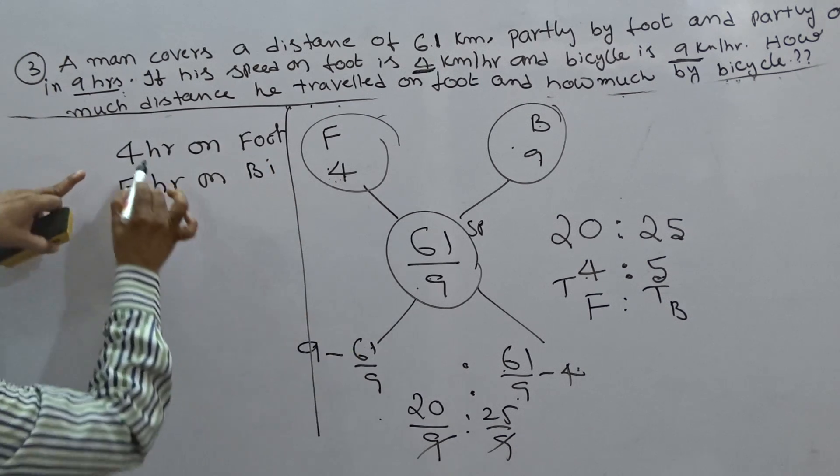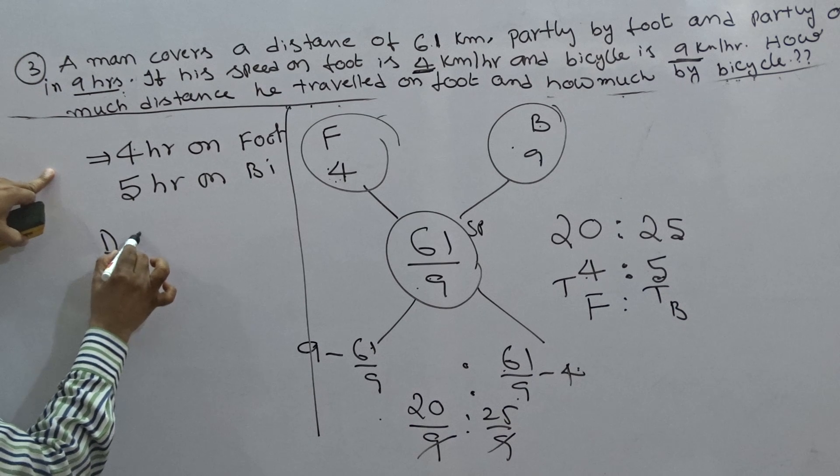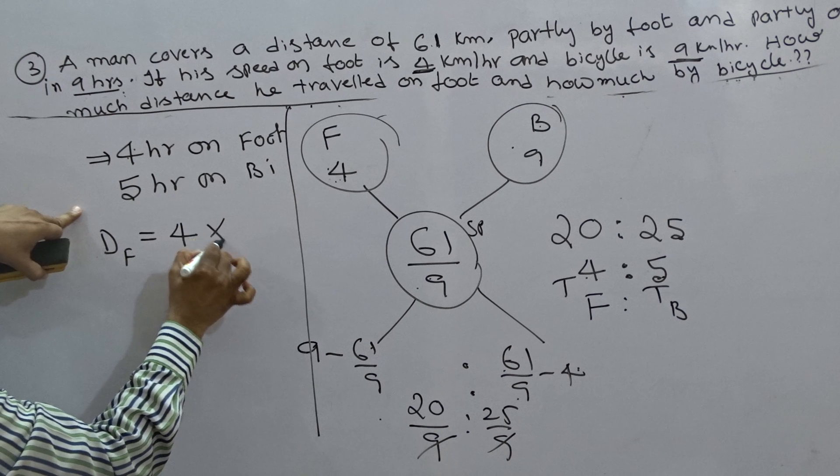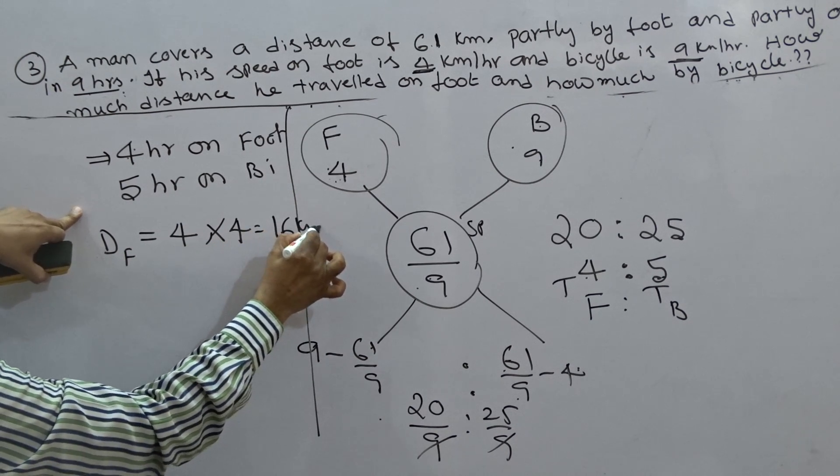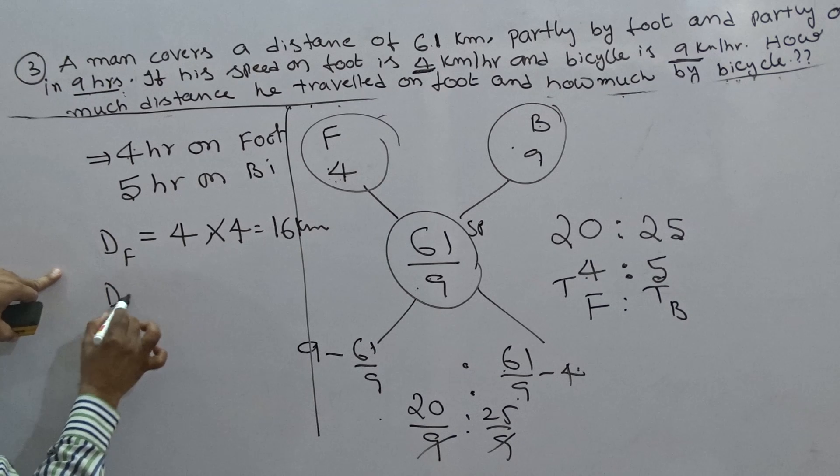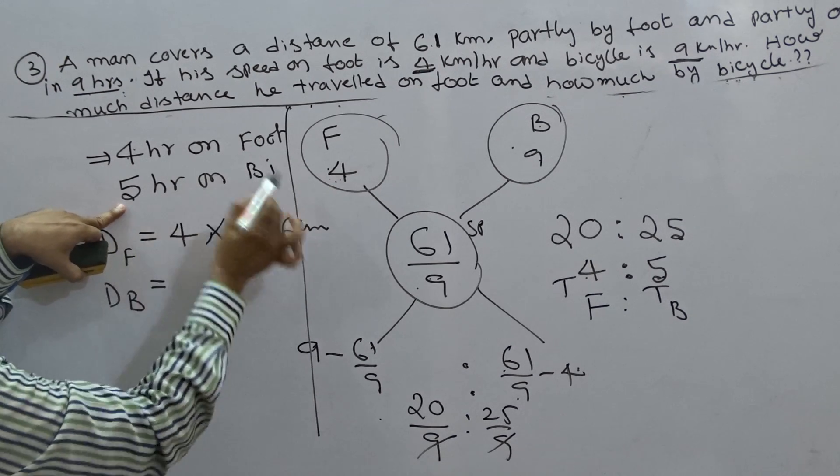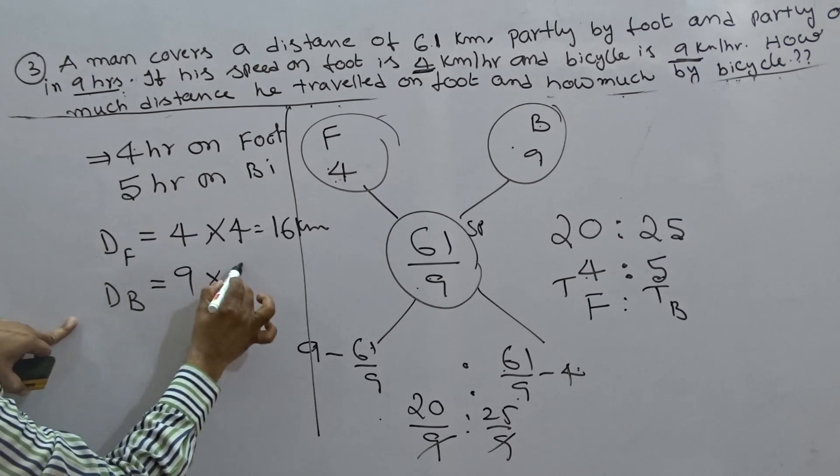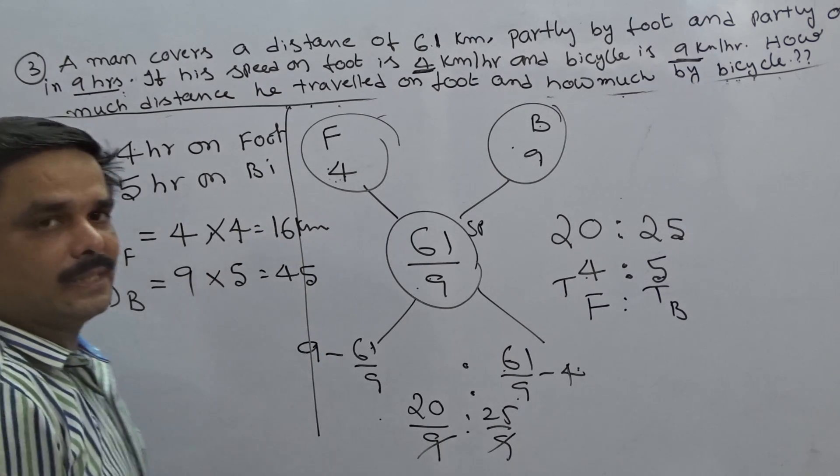So, now, how much distance he traveled on foot? Distance traveled on foot is equal to speed into time. Speed is 4 kilometers per hour and time is 4 hours, so that is 16 kilometers. Now, distance traveled on bicycle is speed into time. Speed is 9 kilometers per hour and time is 5 hours. Now, it should be 45. Add these 2, you must get 61.